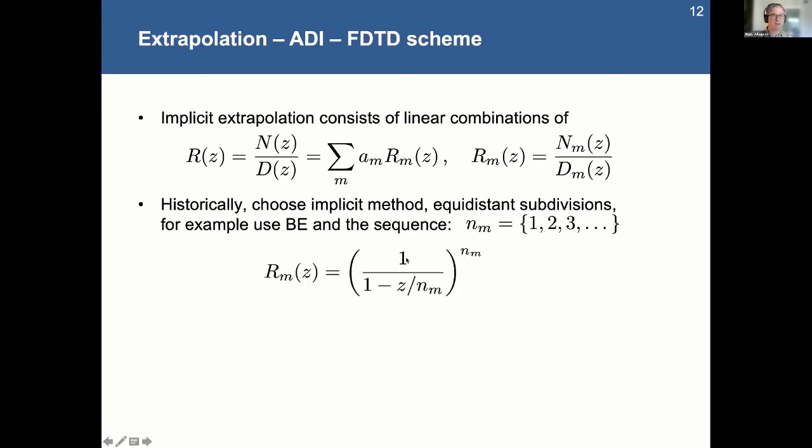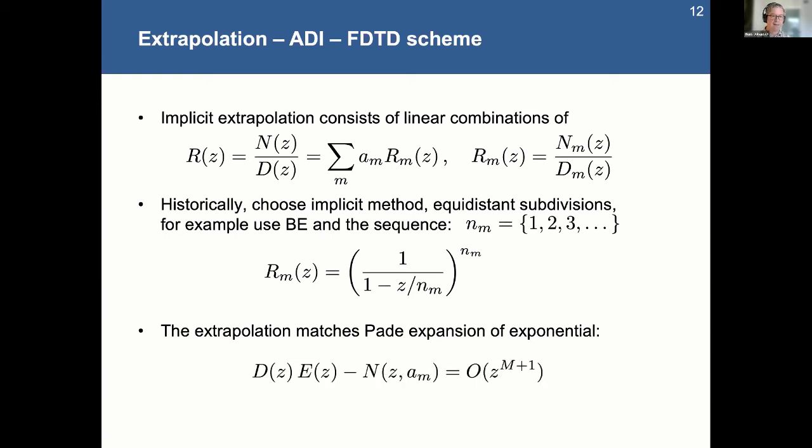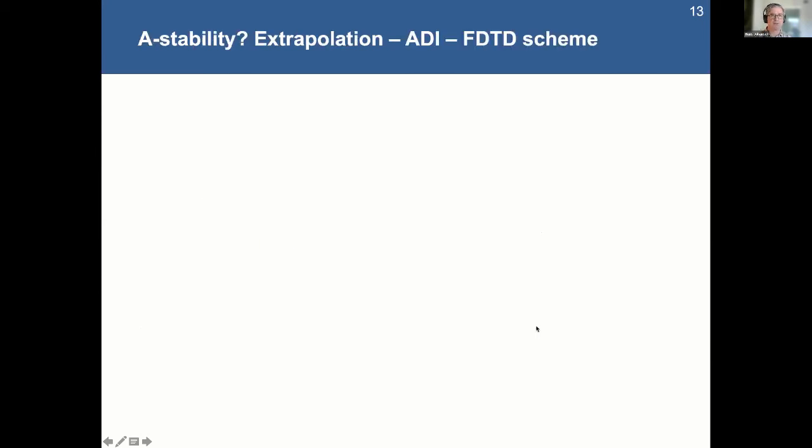For example, for the backward Euler simple one, two, three, four sequence. Each of these terms looks like, you know, four steps, for example, for four subdivisions. And each of those steps is one quarter the size. So very easy to write this out. And you can show that this matches the Pade expansion for the exponential, which, of course, the linear case would be exact. And you can match the Pade expansion terms up to some order and accuracy to get order N accuracy there. So this is all straightforward, implicit error analysis.